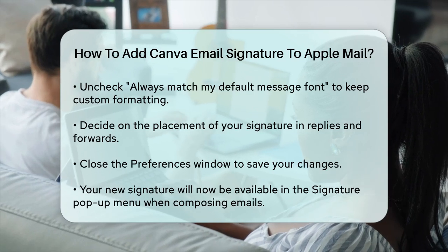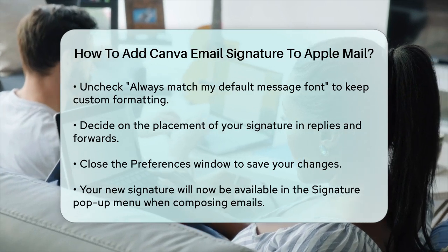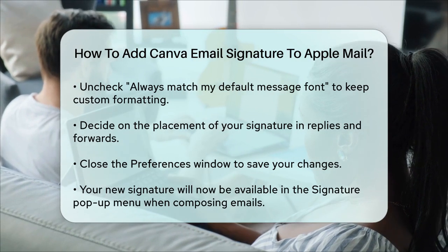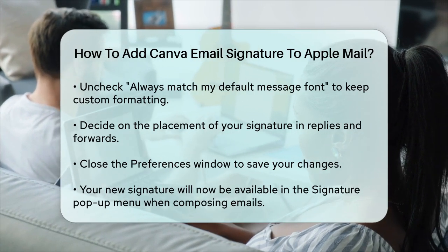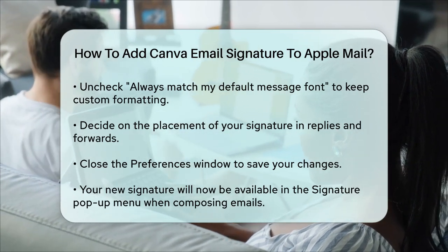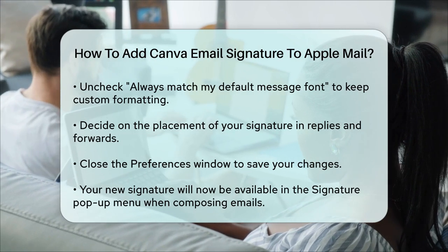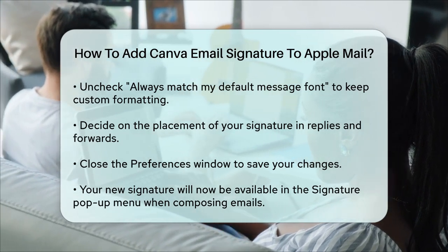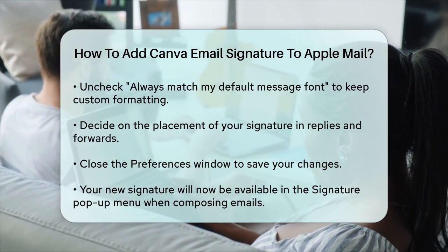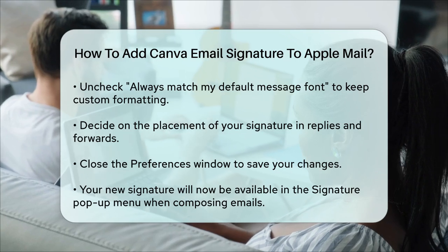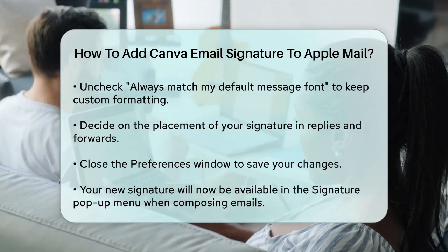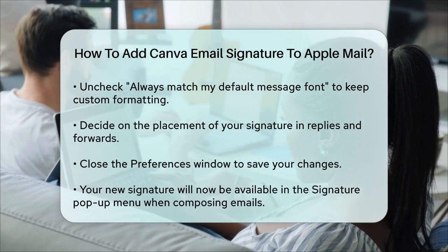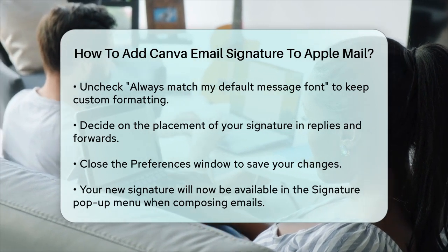Finally, close the Preferences window. When you create a new email, your new signature should be available in the Signature pop-up menu. If it's not showing up, make sure you've selected the correct email account and signature. By following these steps, you'll have a beautifully designed email signature from Canva integrated into your Apple Mail, making your emails look more professional and personalized.